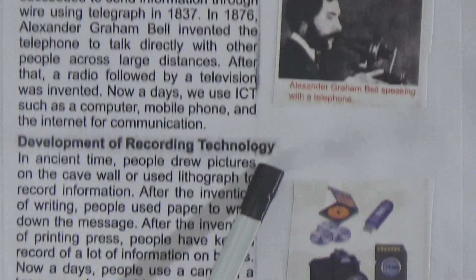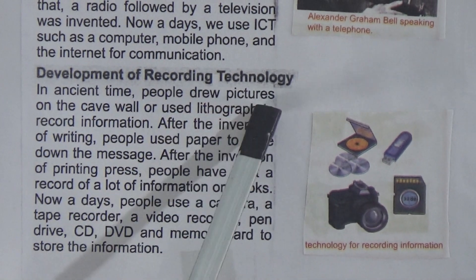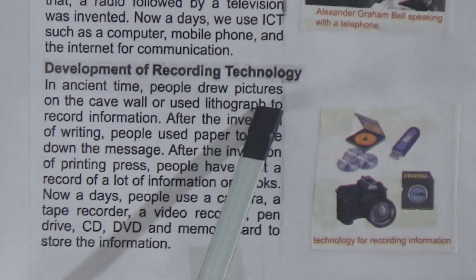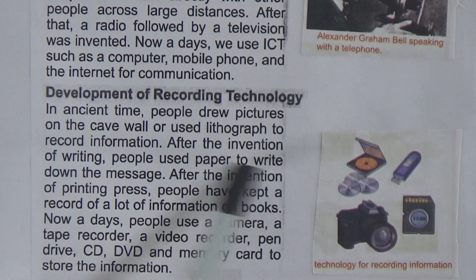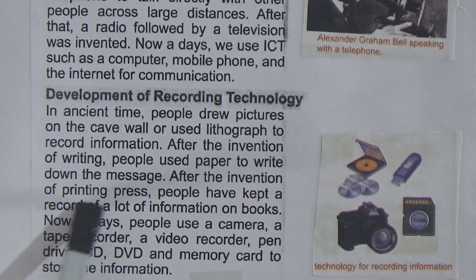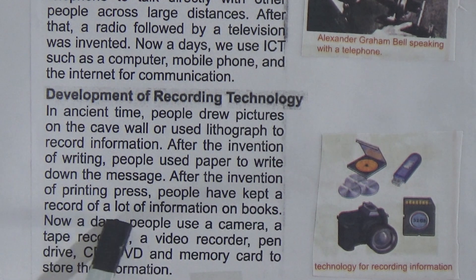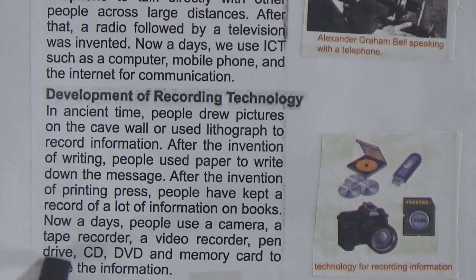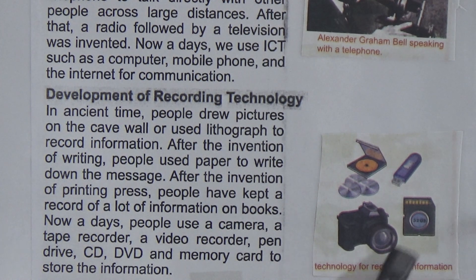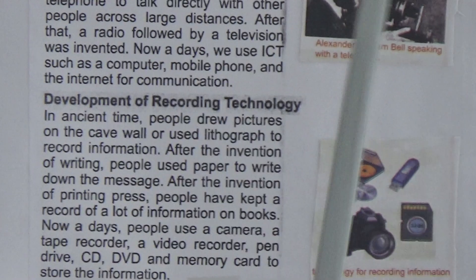Now, development of recording technology: at some time, people drew pictures on cave walls or used lithographs to record information. After the invention of writing, people used paper to write down messages. After the invention of the printing press, people kept records of a lot of information in books. Nowadays people use a camera, tape recorder, video recorder, pen drive, CD, DVD, and memory card to store information. In this picture you can see a camera, a memory card, a pen drive, and a DVD.